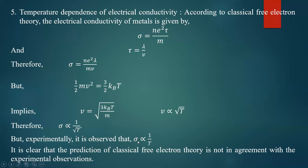Substituting this, since velocity is proportional to the square root of temperature, the electrical conductivity sigma is inversely proportional to the square root of T. But experimentally, it is observed that sigma is directly proportional to 1/T — not 1/√T. So the prediction of classical free electron theory is not in agreement with experimental observation. The temperature dependence of electrical conductivity cannot be explained — classical theory predicts σ ∝ 1/√T whereas experiment gives σ ∝ 1/T.